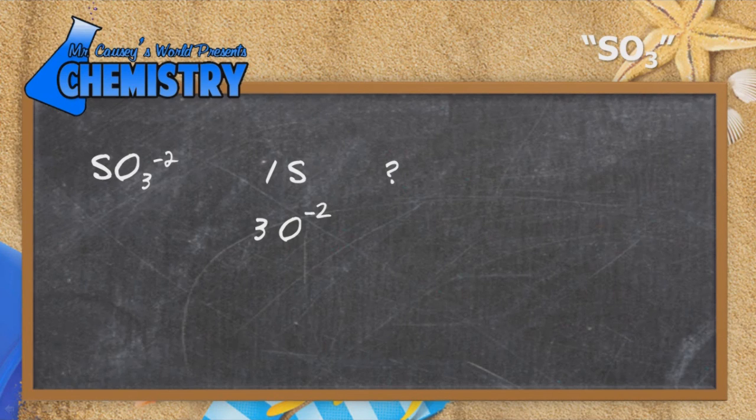So three times negative two is negative six, and the total charge on three oxygen ions is negative six.